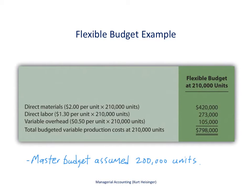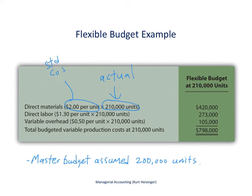Here's an example of a flexible budget. The first thing to note is that it is based on actual unit sales — actual information, not budgeted information. After the fact, let's assume that we produced and sold 210,000 units for the period. We take that actual production information and multiply it by the budgeted, or standard, cost per unit, and that gives us the flexible budget amount.